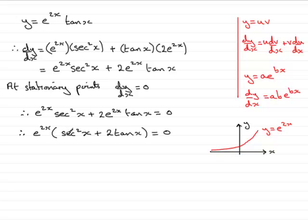So, that means that this bracket must be equal to 0. So, therefore, sec squared x plus 2 tan x must be equal to 0.